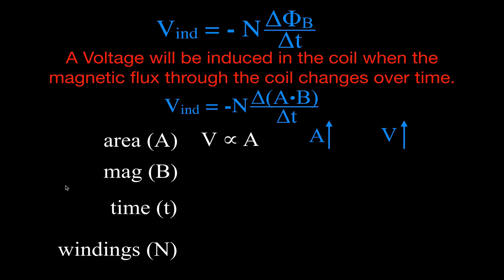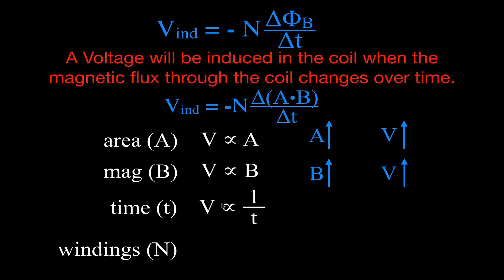The same thing goes for the magnetic field — B is the symbol for magnetic field strength. It's in the top half of the fraction, so there's a direct relationship between magnetic field strength and induced voltage. If I increase the magnetic field strength, I increase the induced voltage. For the time, it's different — the time is in the bottom half of the fraction, so there's an inverse relationship between voltage and time. If you decrease the time, because it's an inverse relationship, the voltage will increase — if I divide by a smaller number, I get a larger result.